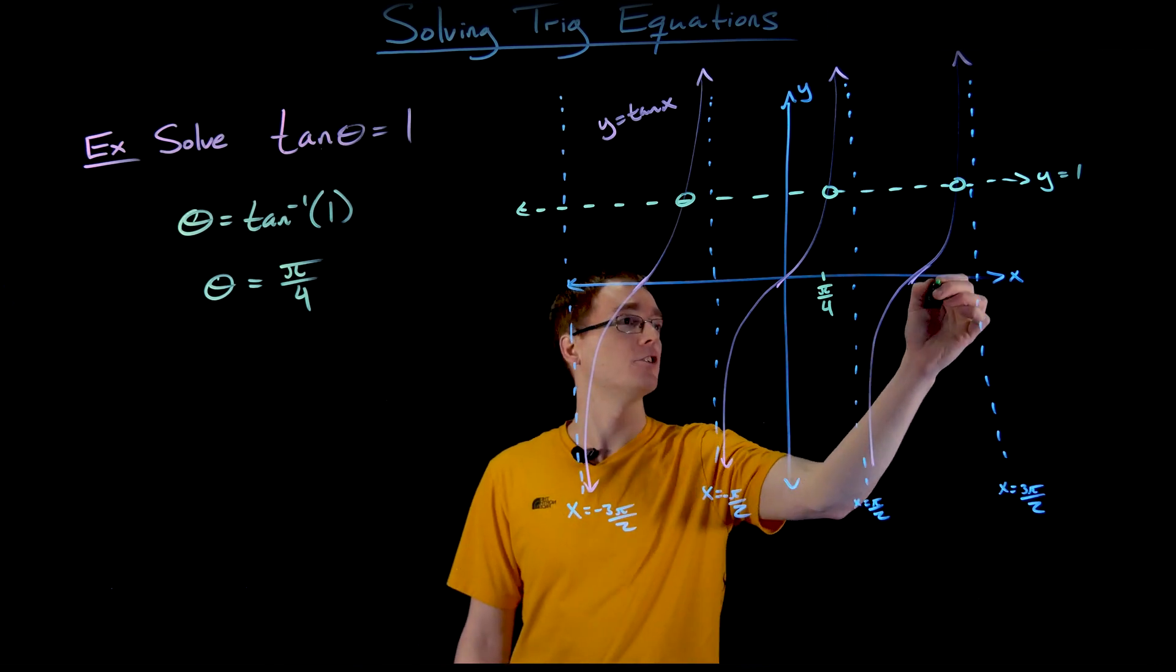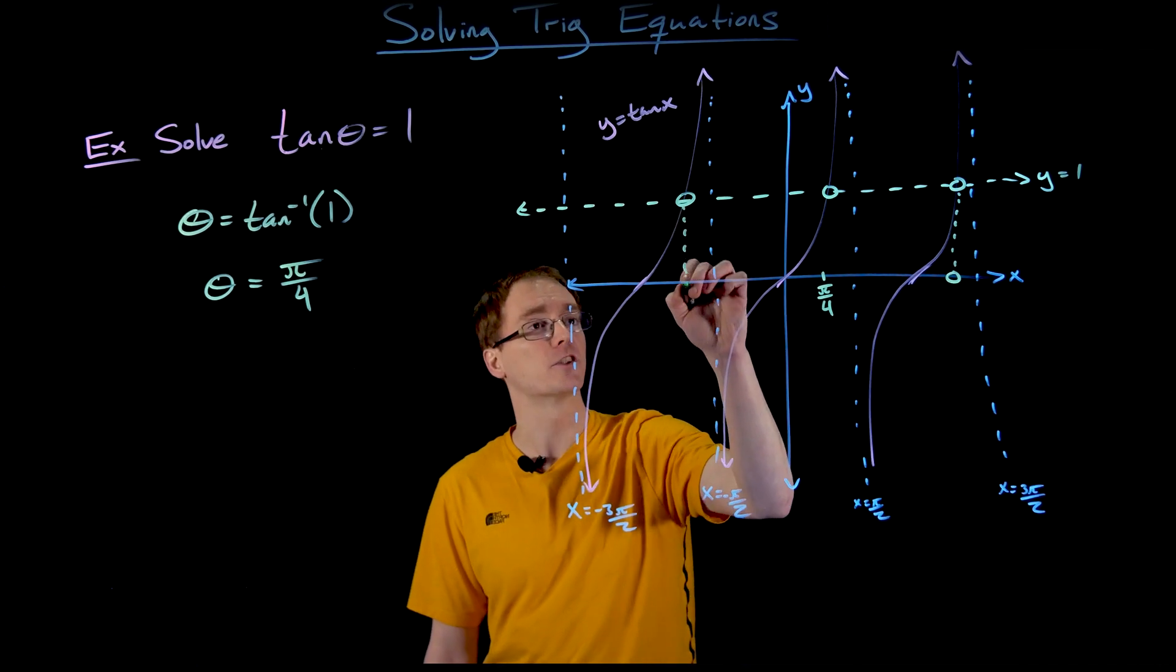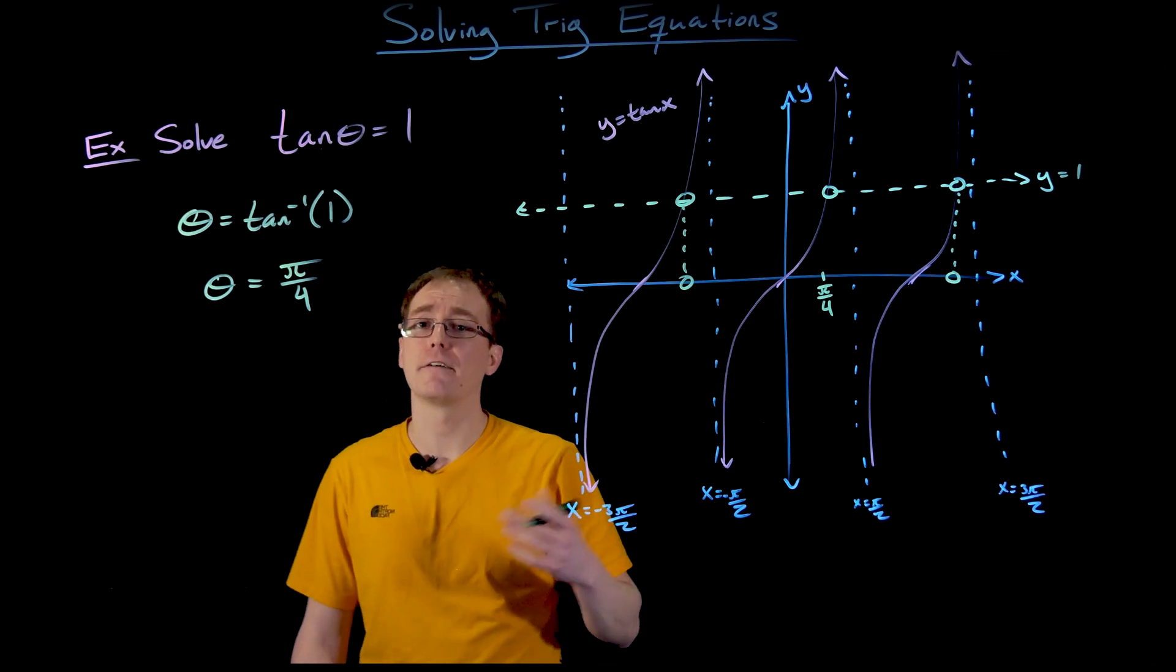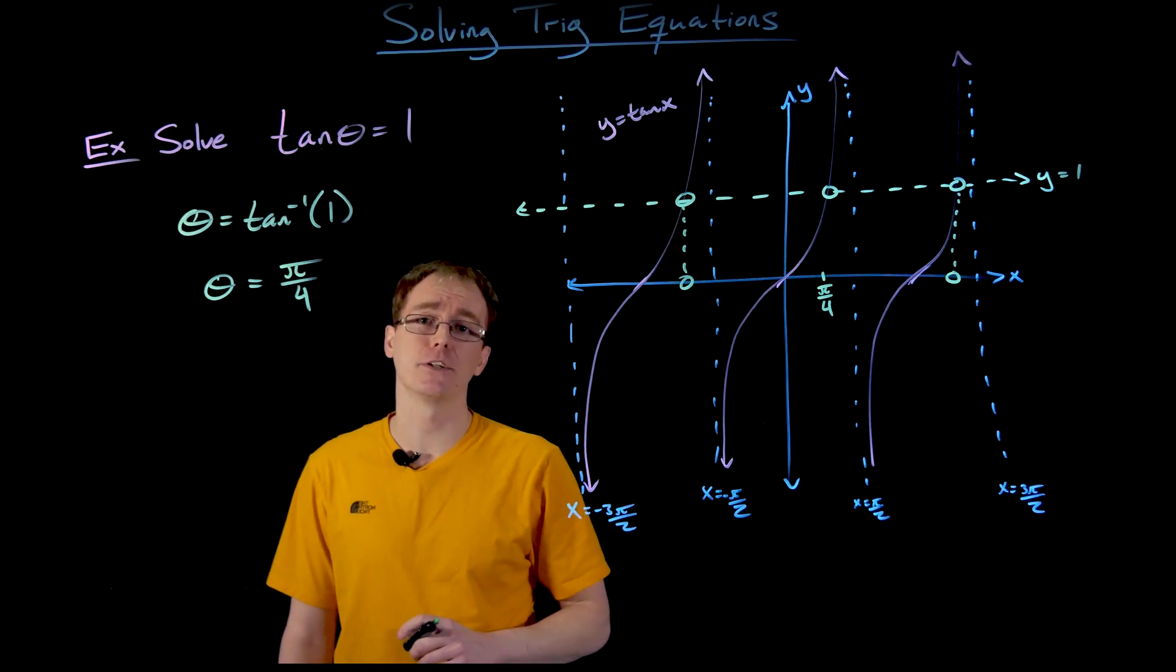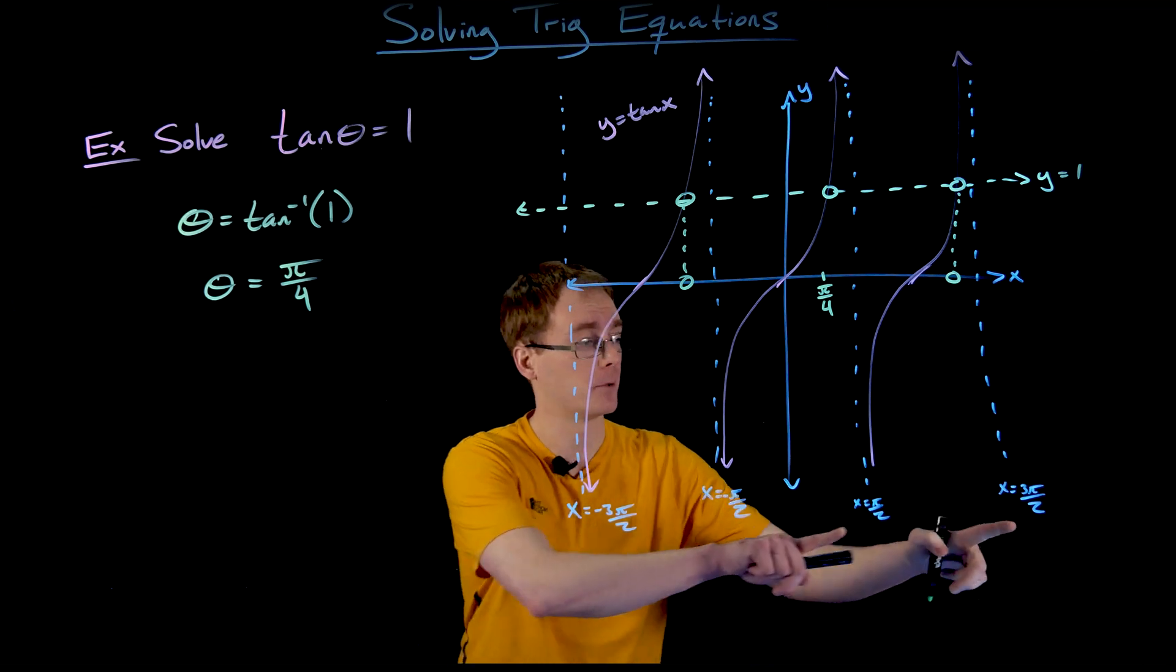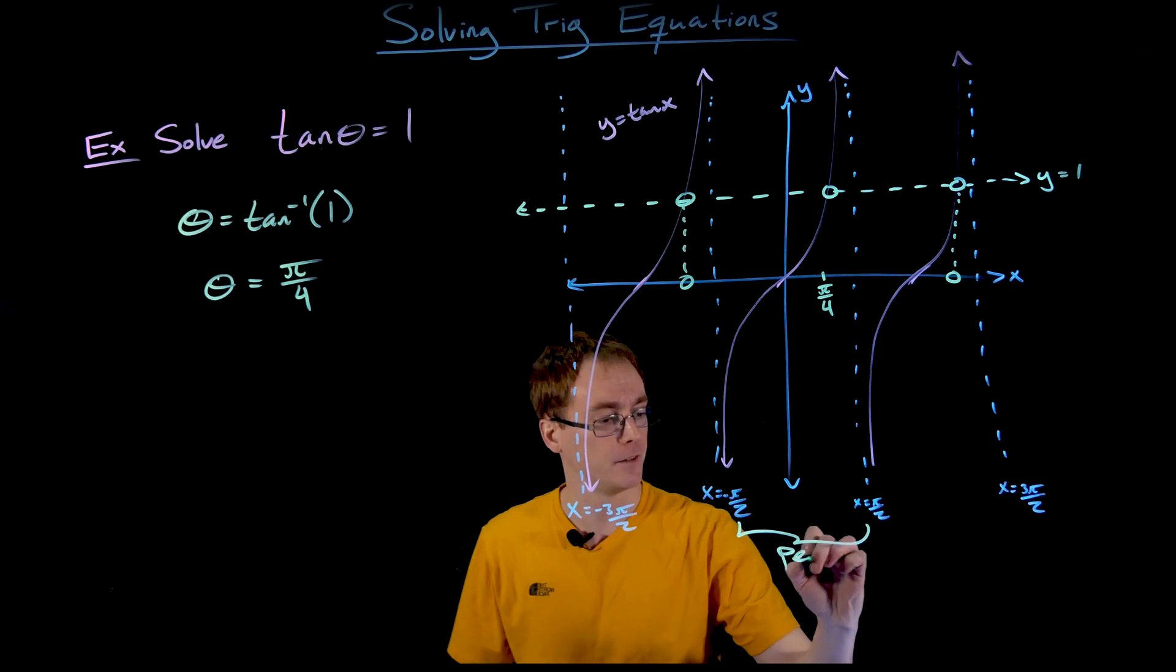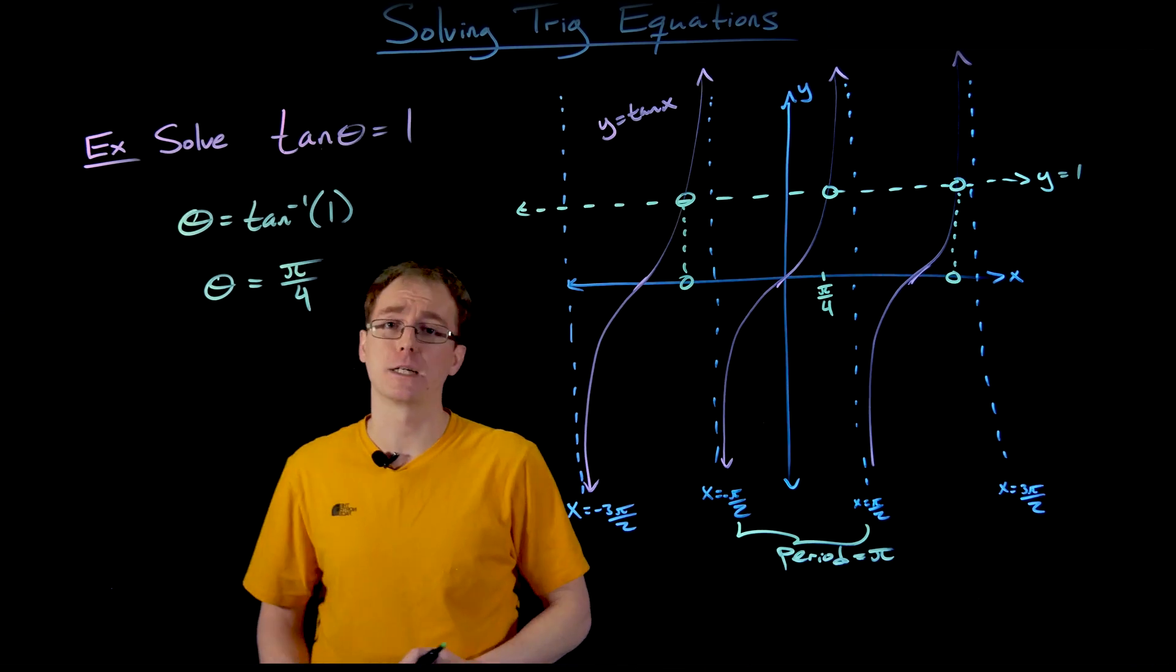How do we get to our second or third solution? These solutions are simply one period away from the first solution. We have to remember the period of tangent. Remember, the period is not 2π like sine or cosine. Tangent has a period equal to π.